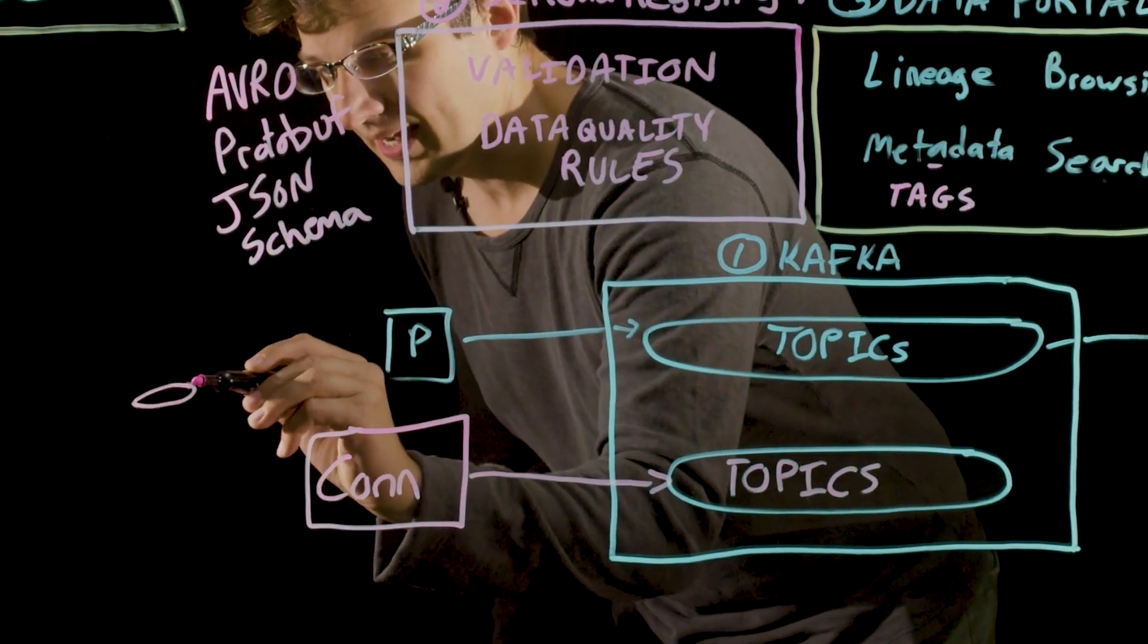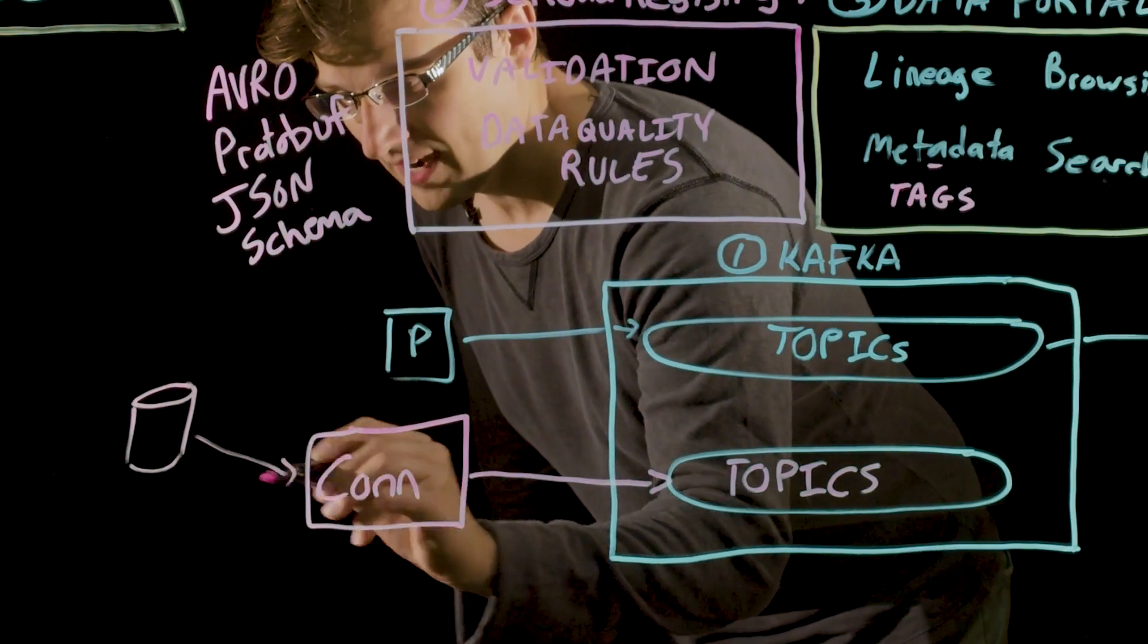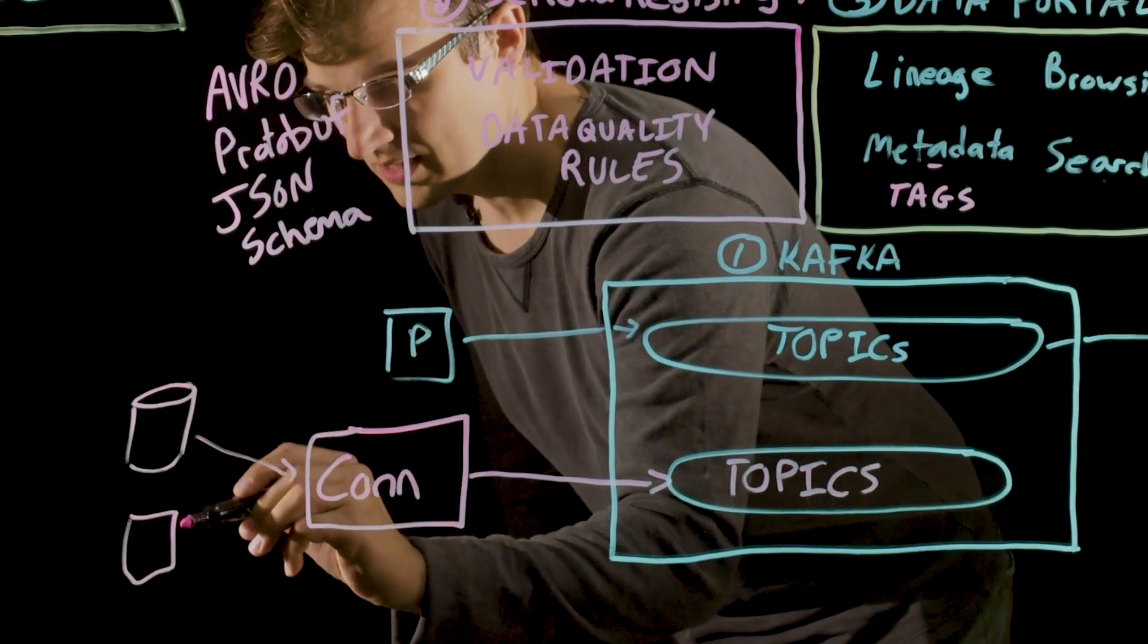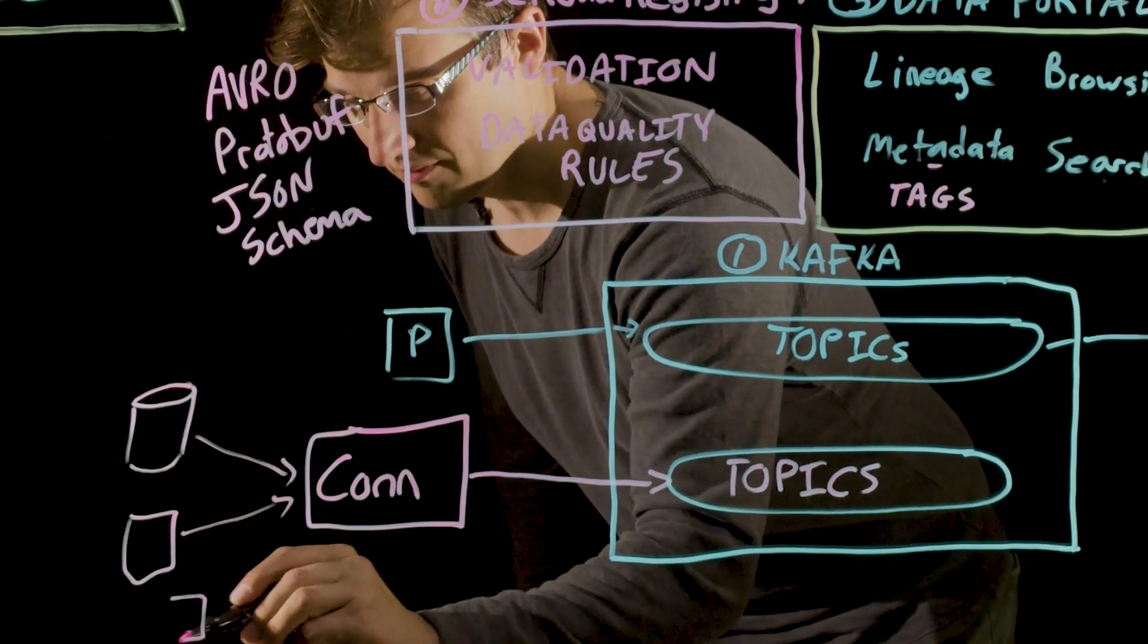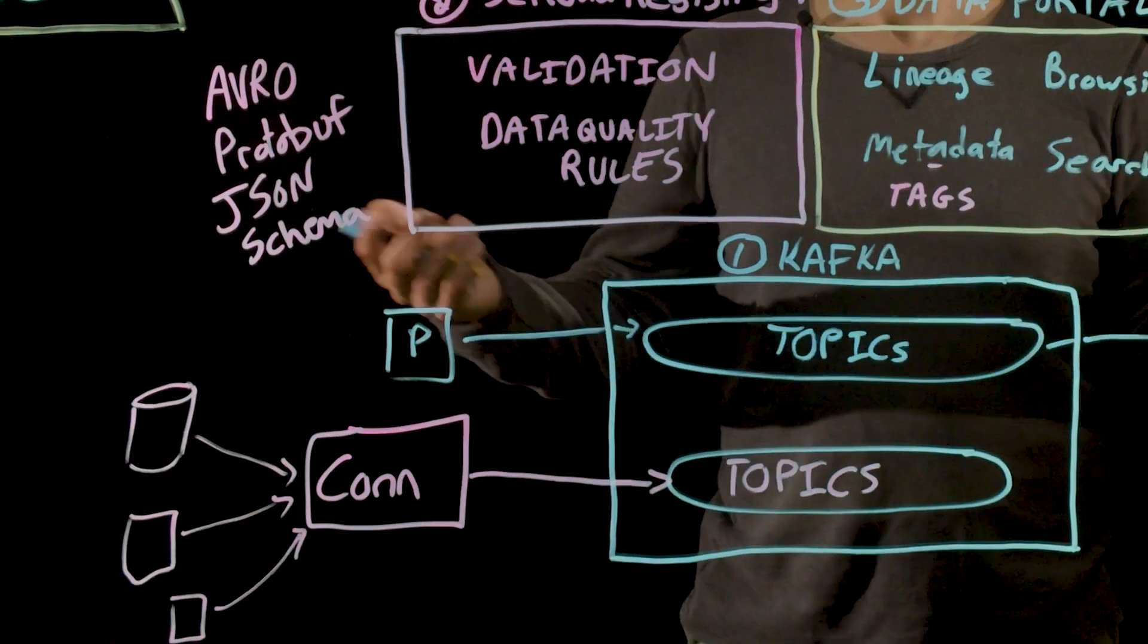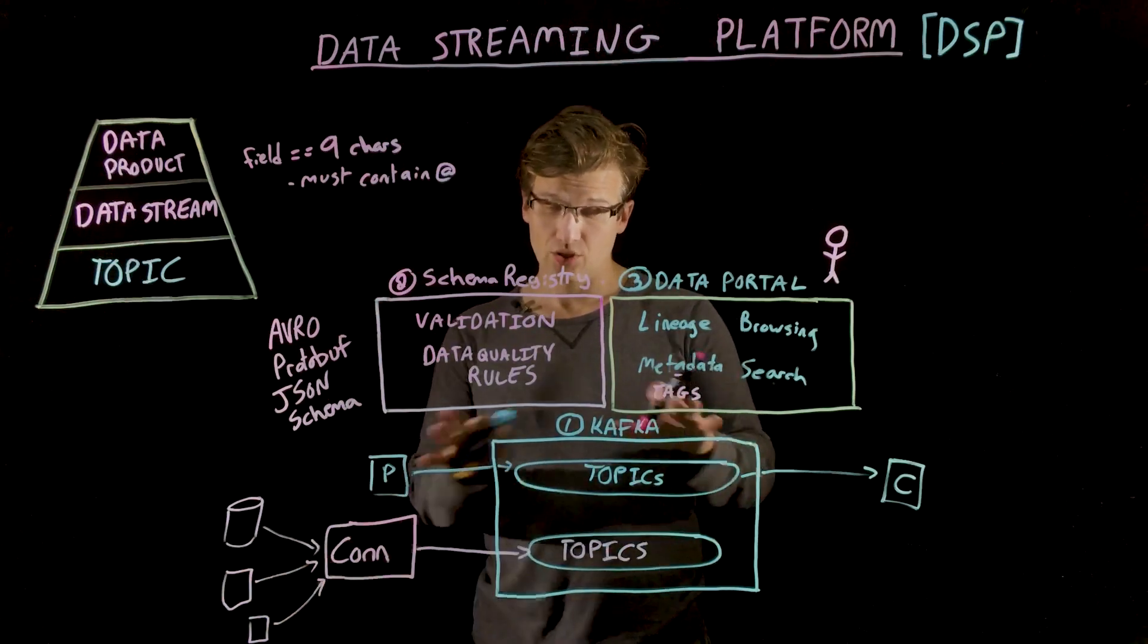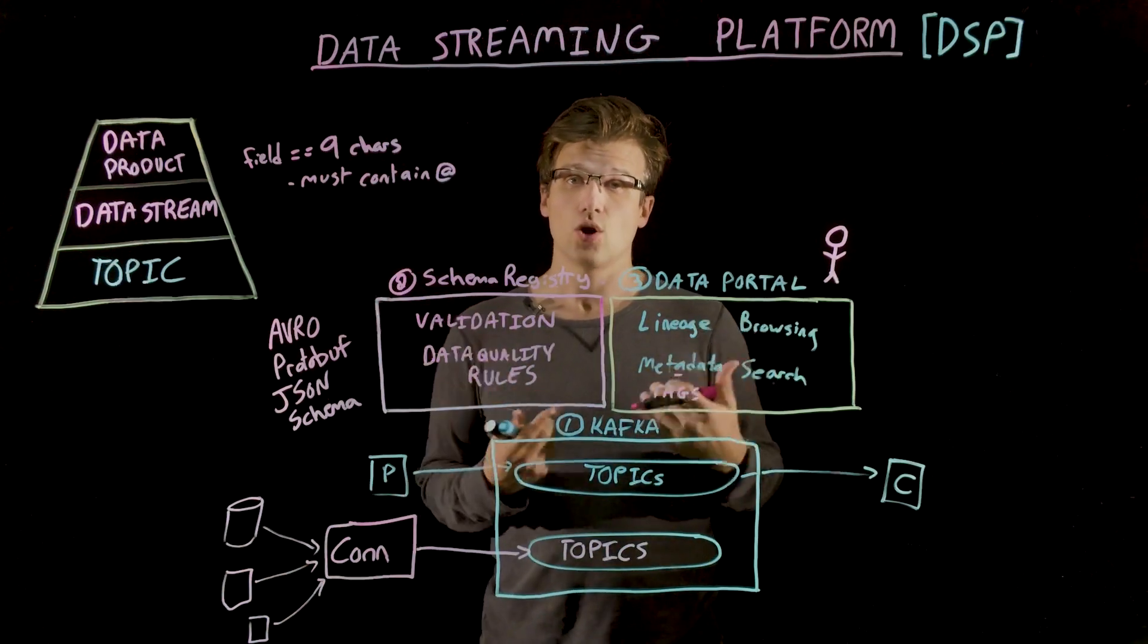Connectors let you get data from existing systems and write them into corresponding topics. This could be something like a relational database, a file system, or even plain files that are dropped into an FTP folder. Connectors let you get your data and put them into your topics without having to write any code.